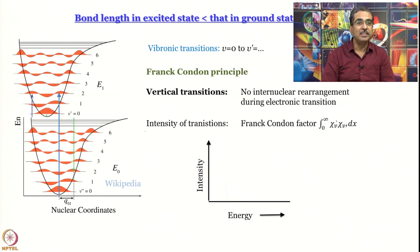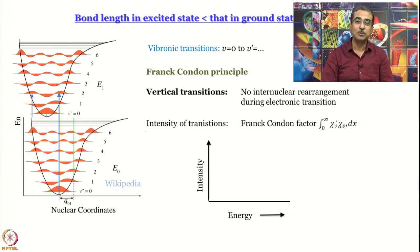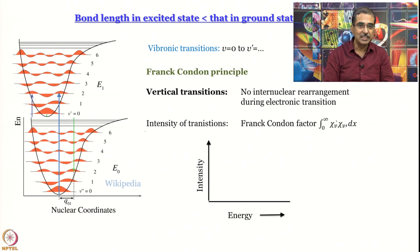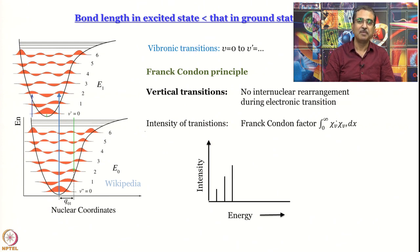What happens if the bond length in the excited state is smaller than in the ground state? The same thing happens as when the bond length is greater — the Frank-Condon factor would be maximum for the 0→2' transition and fall off both ways, so the spectrum would again go through a maximum.